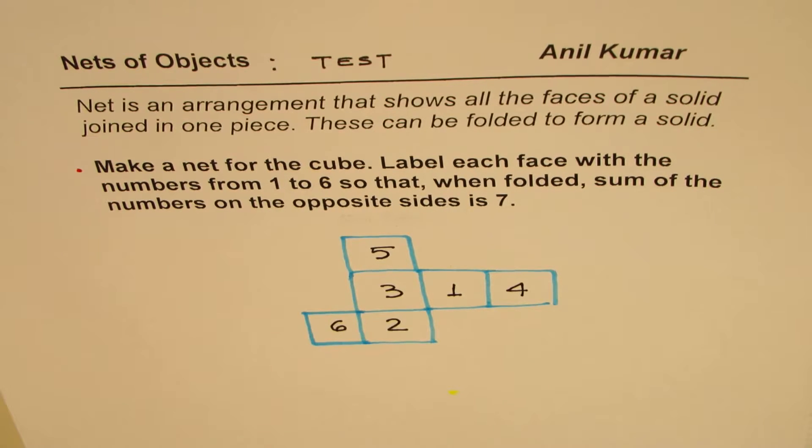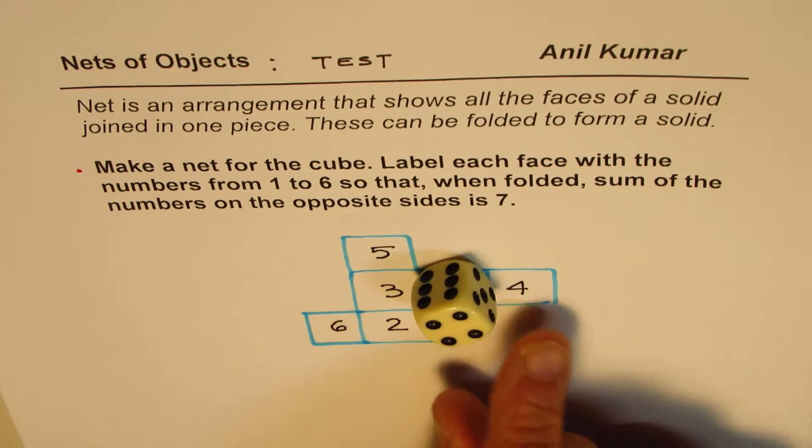That is how I could number the net so that it folds to form a cube whose opposite sides give you a sum of 7, as you have in your die.